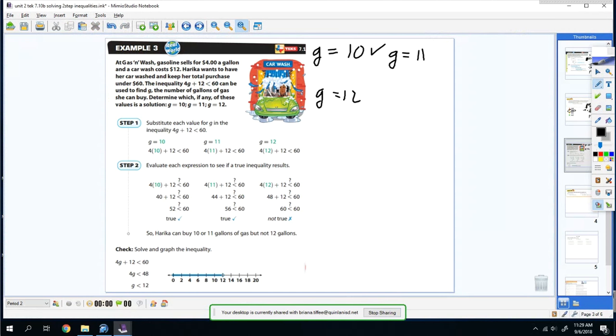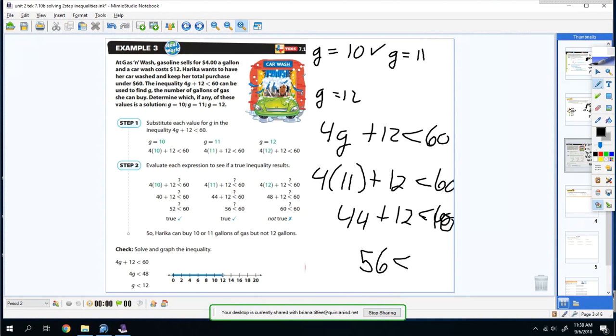So you have 4g plus 12 is less than 60. So now you're going to plug in 11. So you're going to do 4 times 11 plus 12. 4 times 11 is 44 plus 12. So 44 plus 12 is 56. So is 56 less than 60? Yes. That's true as well. All right. Let's try it one more time.